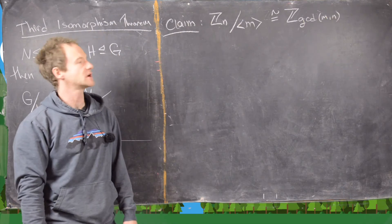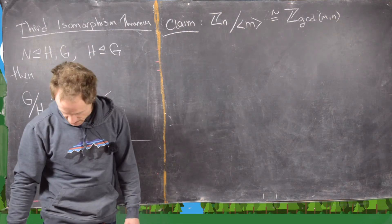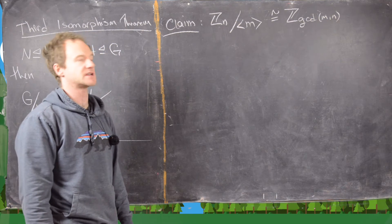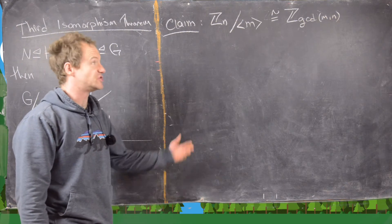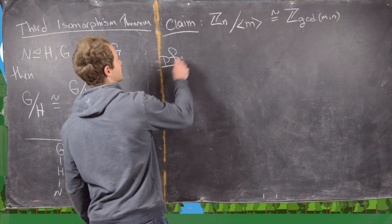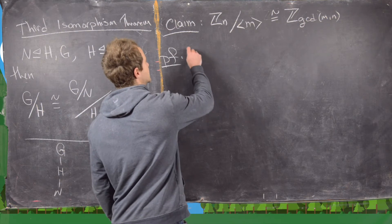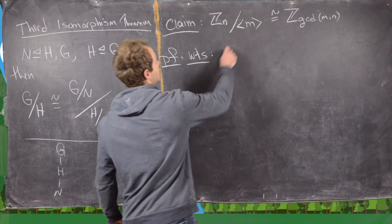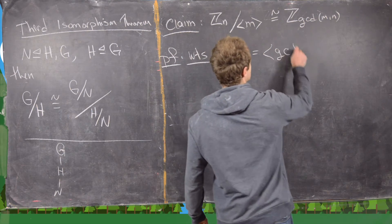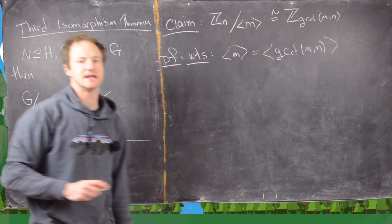The last thing we'll look at, built off of this, is the following claim: Z_n mod the cyclic subgroup generated by M is isomorphic to Z_{gcd(M,N)}. This proof will follow from showing that the cyclic subgroup generated by M equals the cyclic subgroup generated by gcd(M, N).